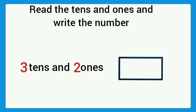Here 3 tens and 2 ones. 3 tens means 30 plus 2 ones, 32. The number is 32.